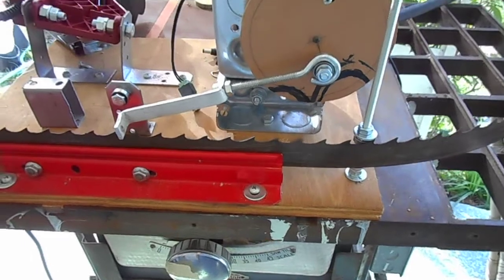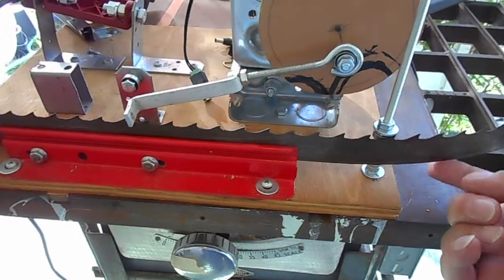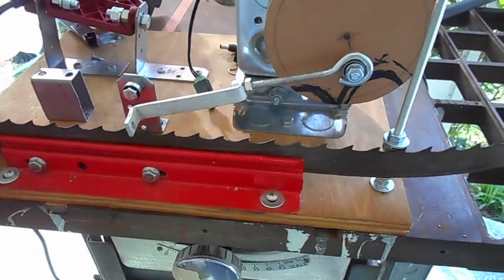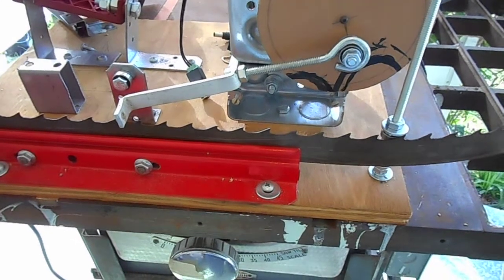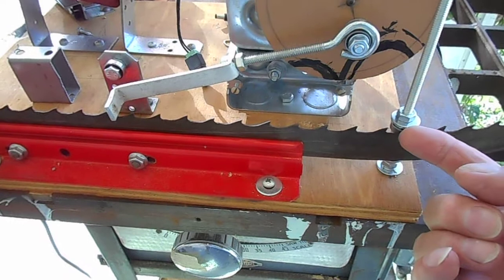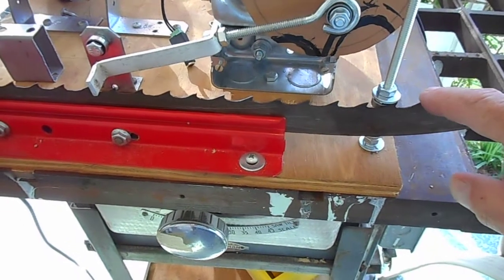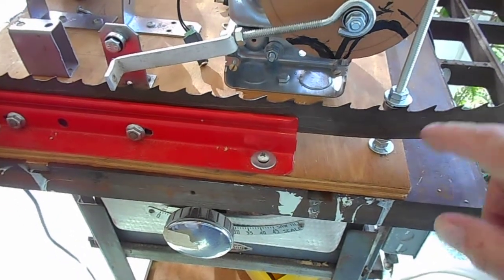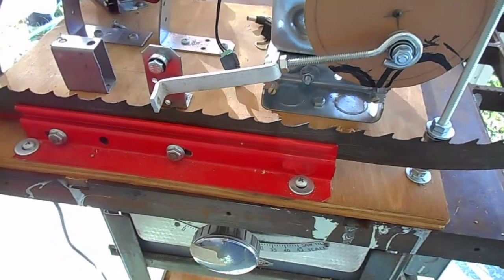As this thing is turning, you'll see it wants to pick the blade up on this side for what reason I don't know. I will continue to work on that, but to stop it I just put a washer on the top and it just forces that tooth down to where I want it to be.